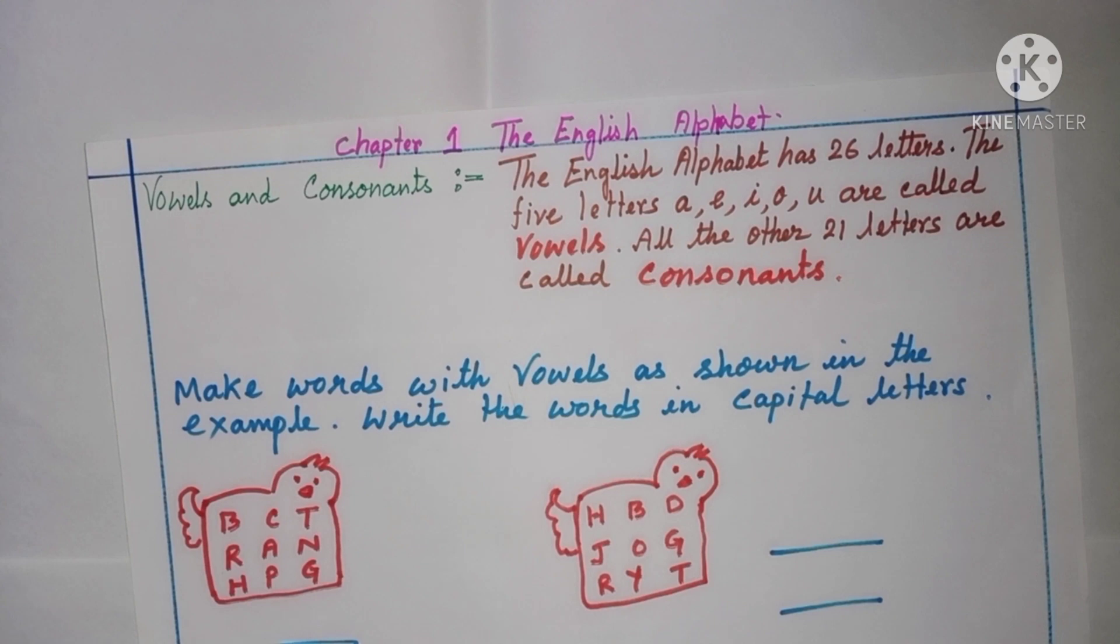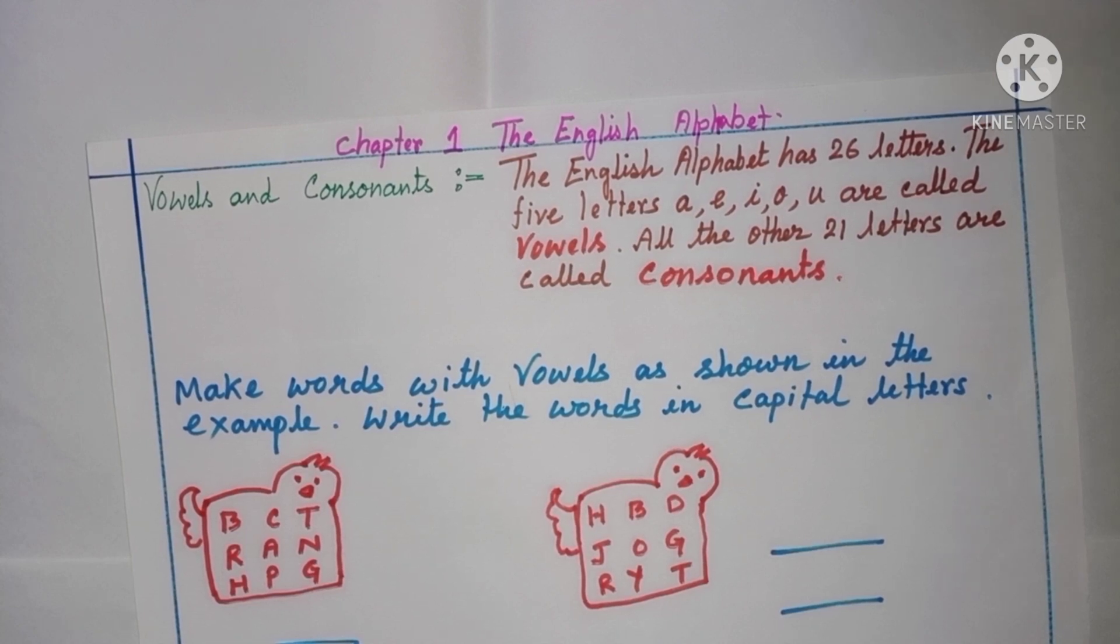Now, children, your Go Grammar book, chapter 1, the English alphabet, I will teach today. And you know, here, English alphabet is very easy. You, it is very known to you all. Vowels and consonants.